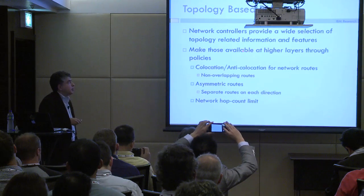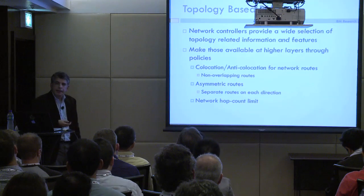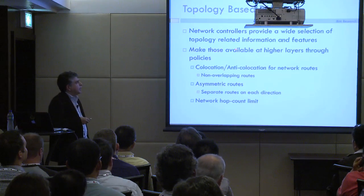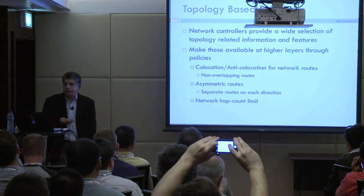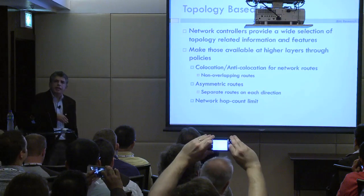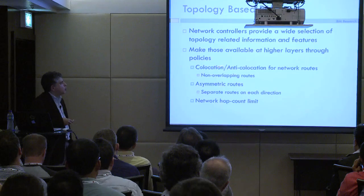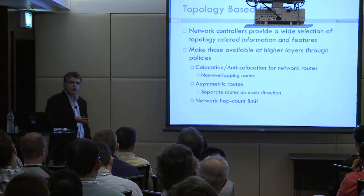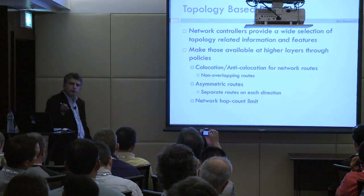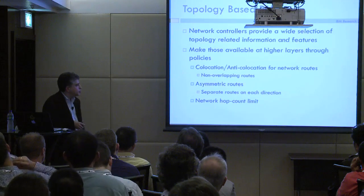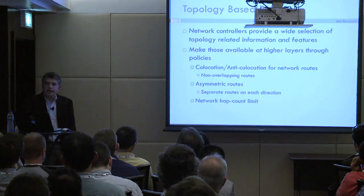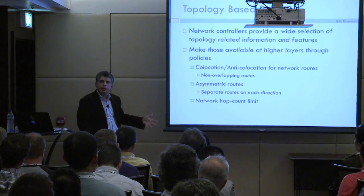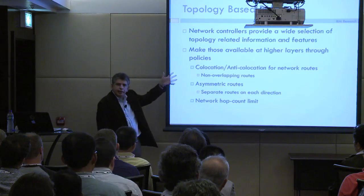Network topology controllers provide a lot of information about the underlying topology, but they are mainly dependent on physical topology. We are saying you could use those information resources and specify policies that relate to topology at a higher layer. You can talk about collocation and anti-collocation for network routes. As part of your policy rules, you can specify asymmetric routes for forward and backward paths between two connectivity groups, and specify hop counts. You are now using topology available at the network controller level — which is very network-centric — at a higher layer of abstraction that doesn't say anything directly about physical topology.